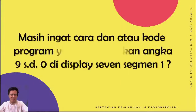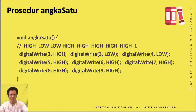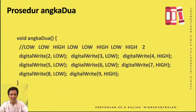Kita akan lihat lagi — nah ini dia. Kalau di pertemuan sebelumnya, kita sudah mencoba menyalakan angka 0-9, atau dibalik 9 sampai 0, di salah satu display 7 segment-nya. Kita mungkin coba melihat atau mengingat lagi, kemarin kita sudah membuat prosedur yang kita bisa menyalakan — kalau kita panggil prosedur ini, maka nanti dia akan menyalakan angka 1 di display 7 segment-nya. Ingat di pertemuan sebelumnya, kita menyalakan segmen-segmen itu: A, B, C, D, F, G-nya. Di tabel ini ada digital pin 2, A, B, C, D, F, G.